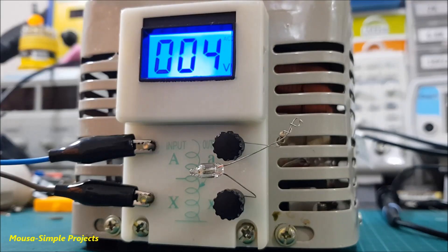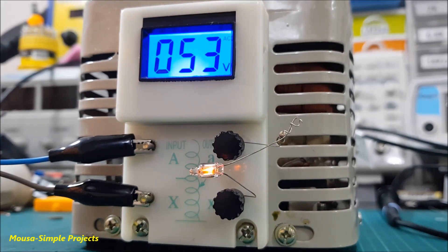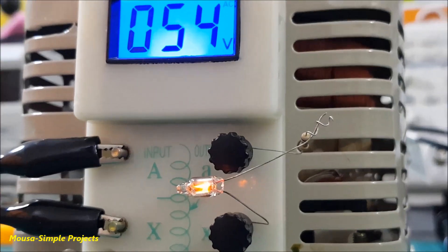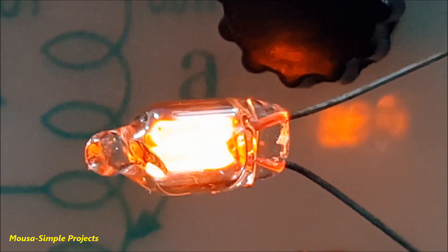I repeat this experiment but this time using AC voltage. As you can see, it glows when the voltage reaches about 50 V AC. At this time both electrodes glow because the voltage is AC.